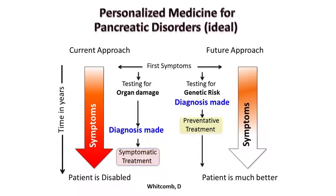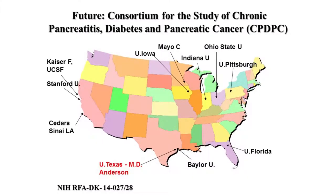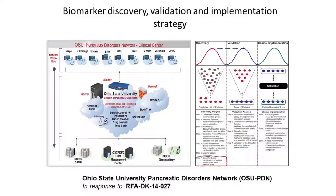This is Dave Whitcomb's approach to personalized medicine — we currently make the diagnosis of chronic pancreatitis much later in the game. The future approach involves doing genetic testing early, categorizing patients into different pancreatitis syndromes, and finding urine or blood biomarkers to predict each patient's natural history — will they have continued attacks or just one attack? A large U01 consortium is working to answer these questions by looking at patients with recurrent acute pancreatitis and trying to predict who will progress based on serology and urine studies.